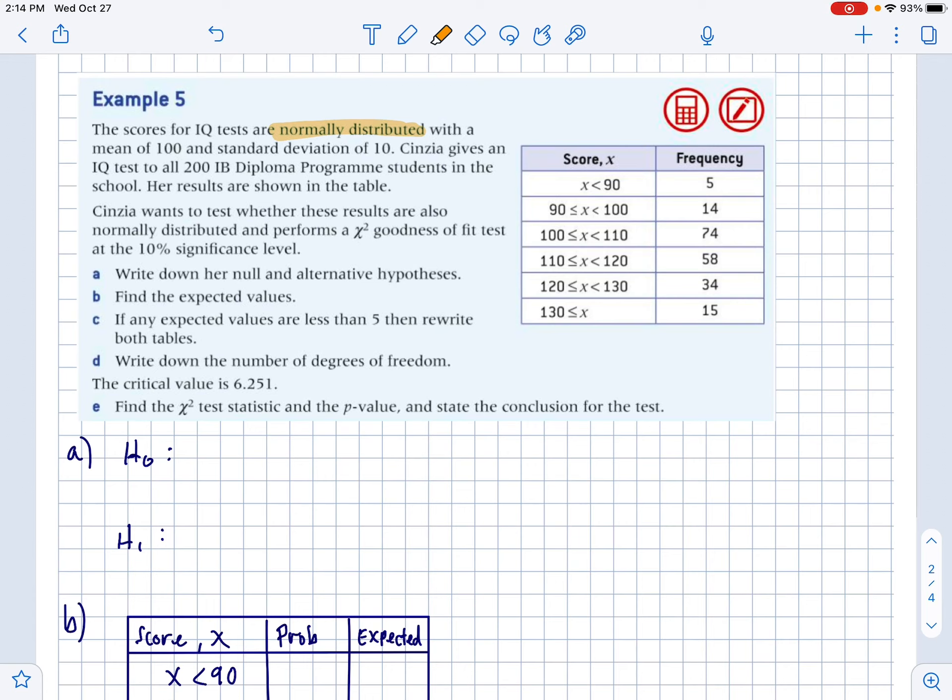Now we're going to use chi-squared goodness-of-fit test, but it's slightly more complicated, because we're going to try to figure out if things are normally distributed. So that last one was uniform distribution, which is that it's all fair across the board. Now we're going to check if this has a normal distribution. Remember, a normal distribution is that bell curve.